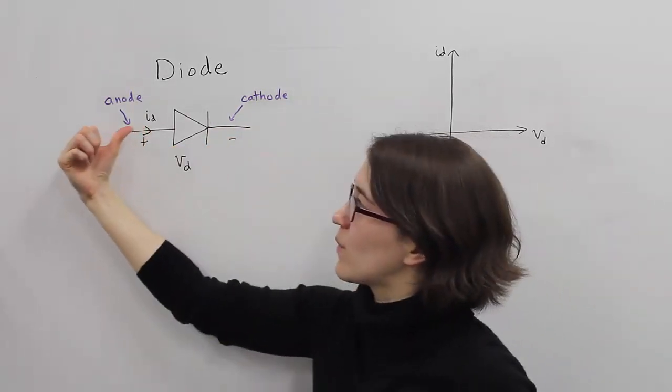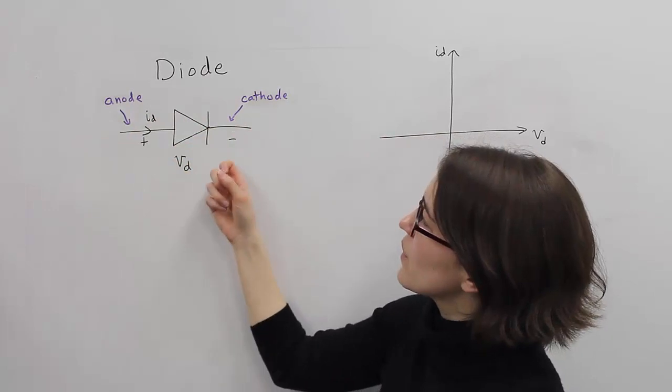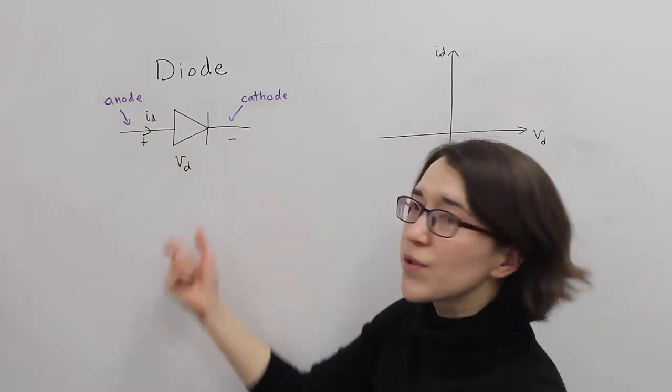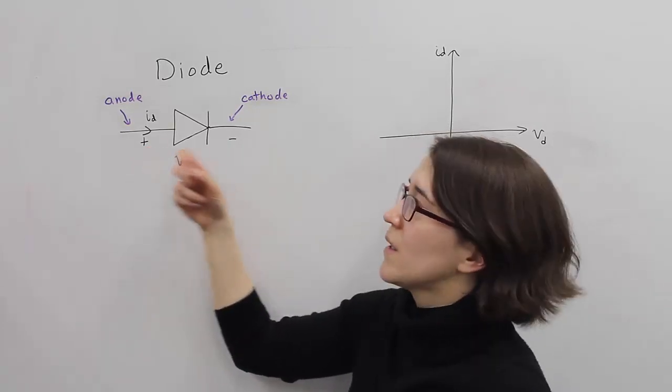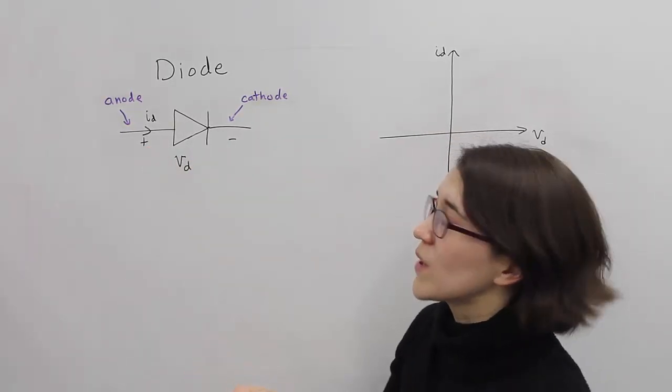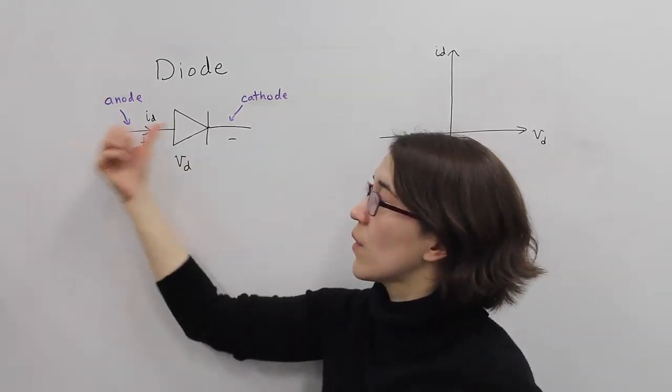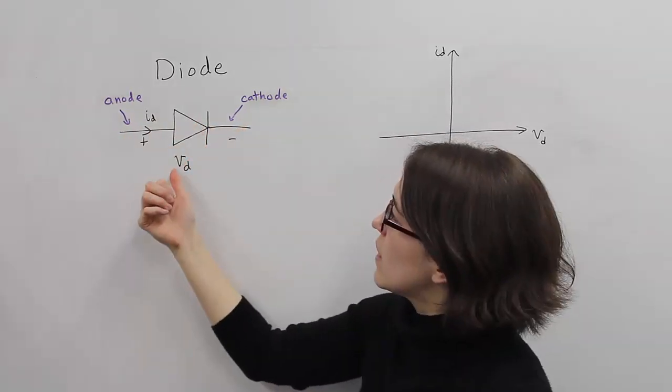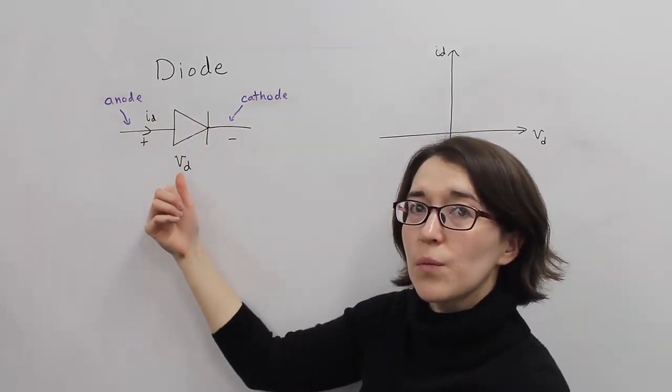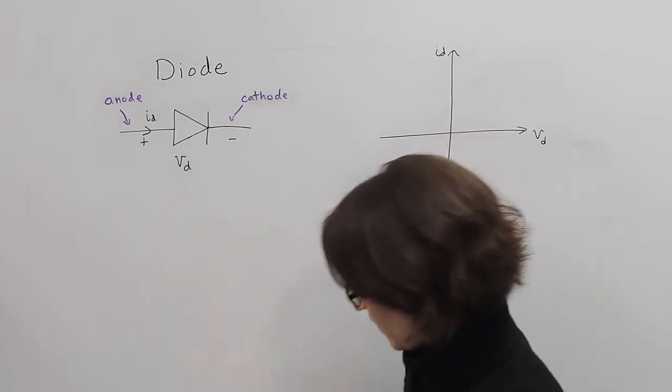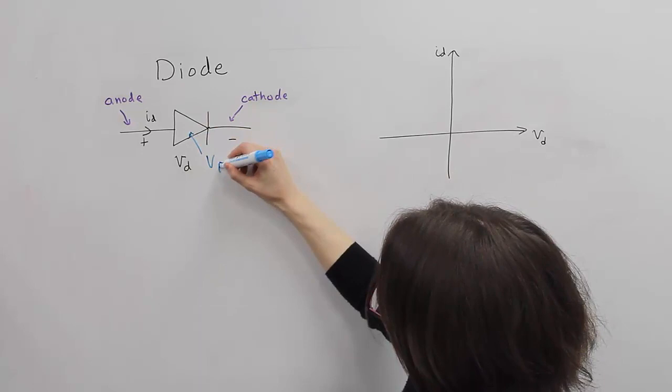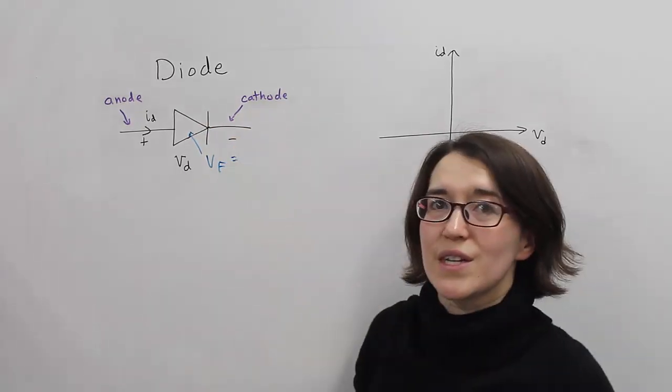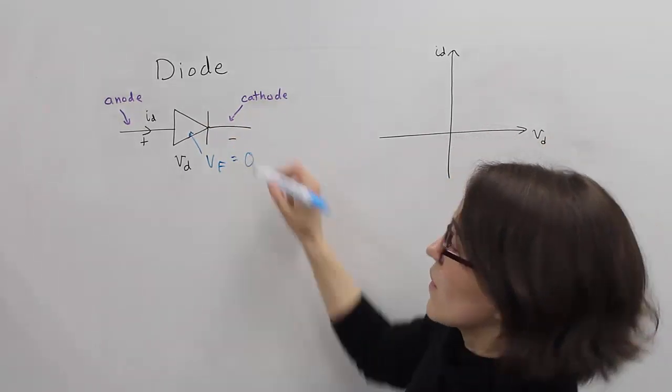And so the current flow we expect to go in this way. And we've labeled the voltage over the diode from here to here. So when the switch is on, current flows through it. And the voltage of the diode will be some value. We call this the forward voltage, V forward. And in the true ideal case it would be zero.